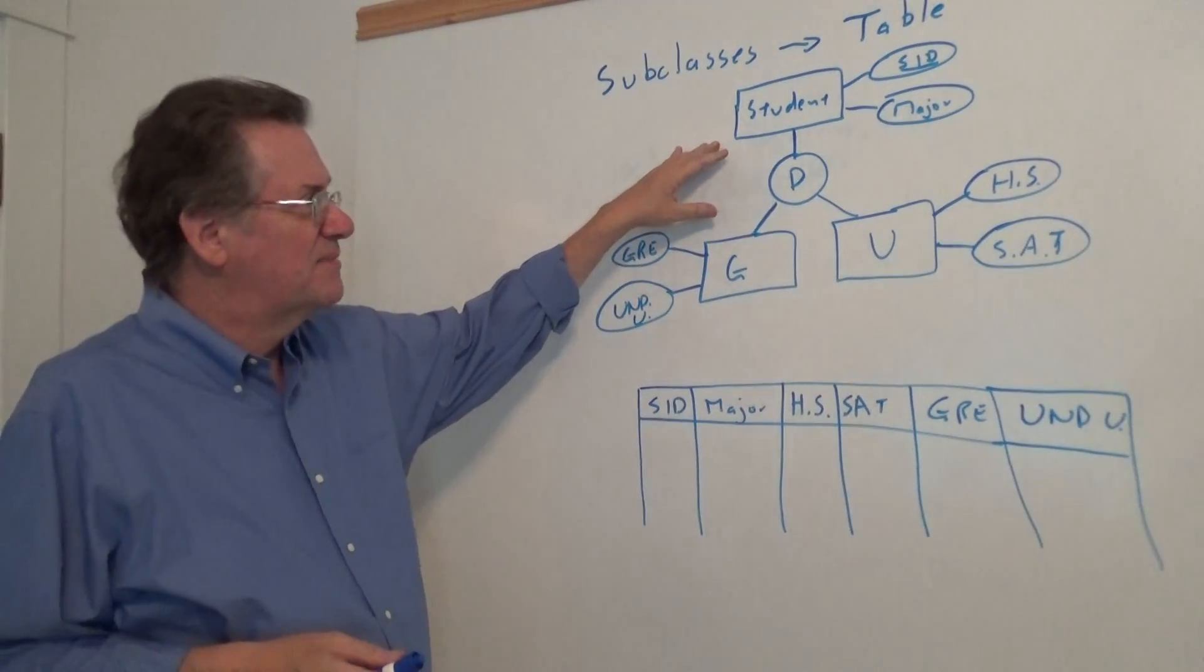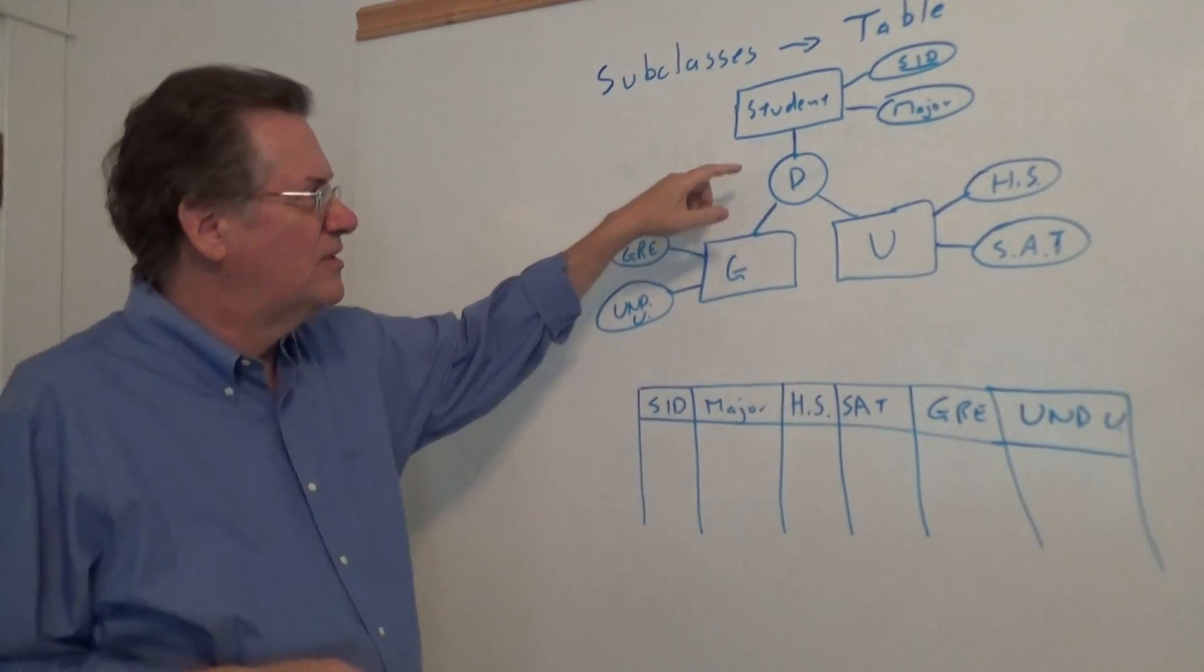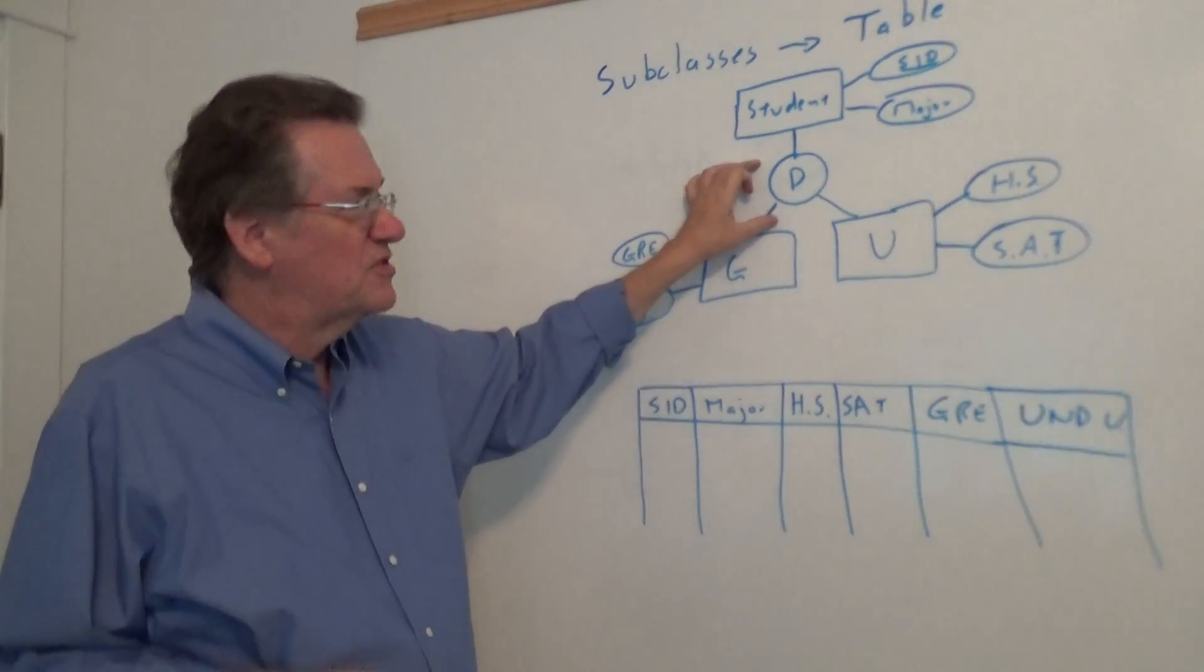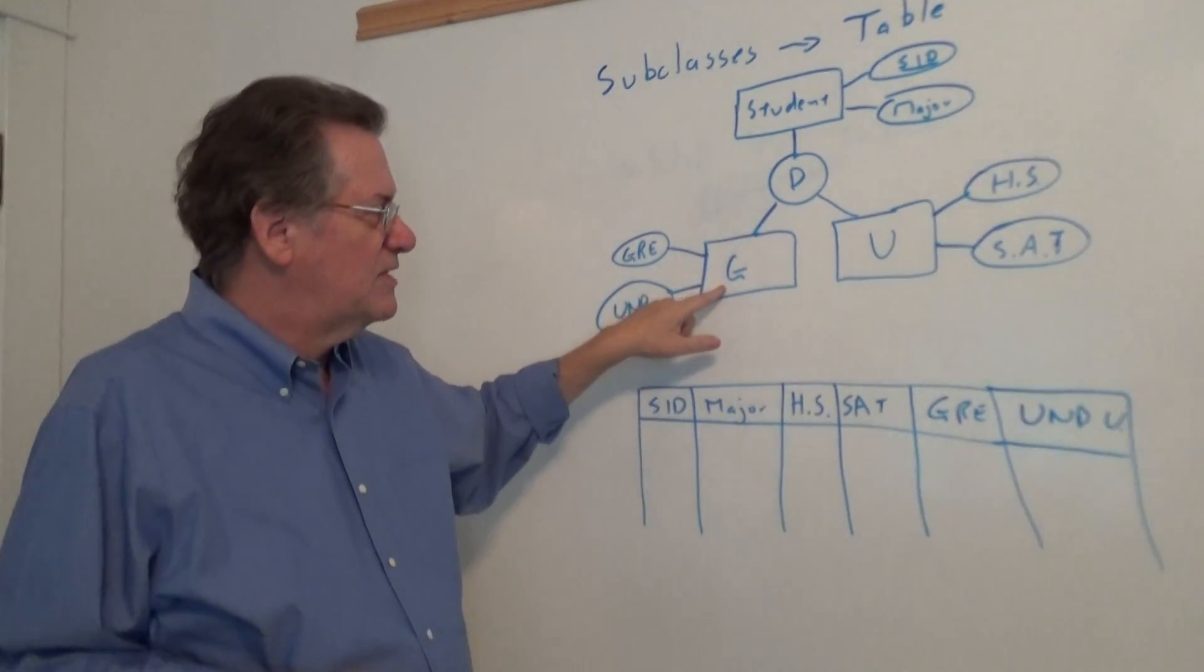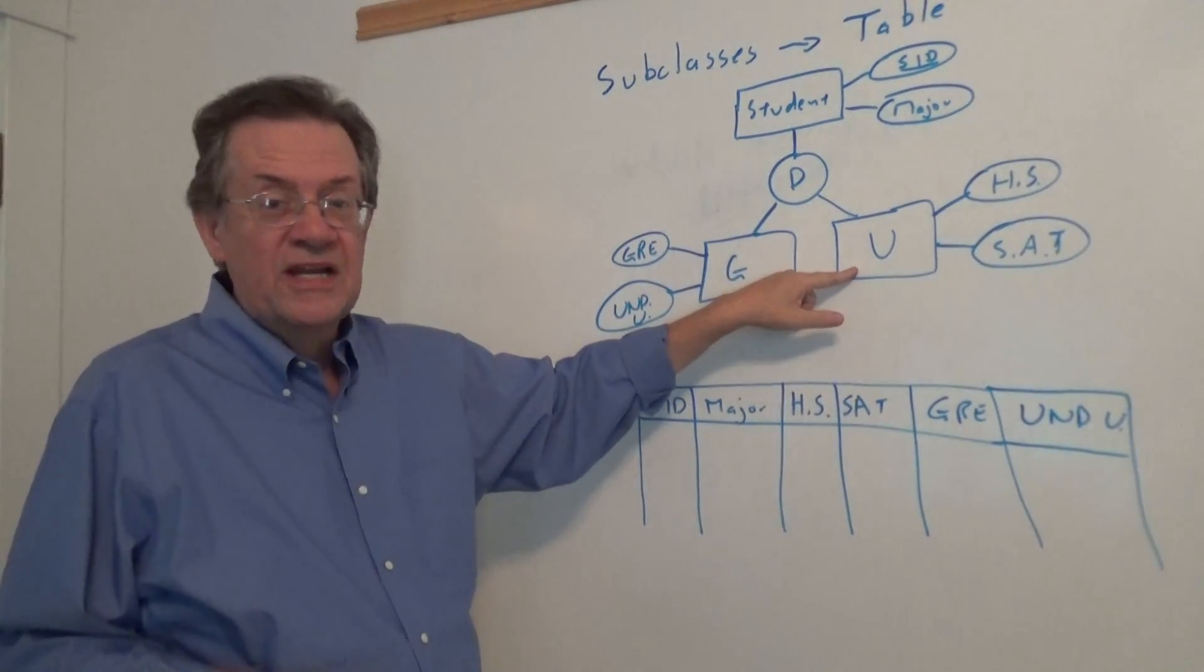Refreshing your memory, we had something like this in a previous EER video. We said student, they might have a student ID and major. And then we had this circle here representing this joint. Then we said the subclass, they could either be graduate or undergraduate, but not both.